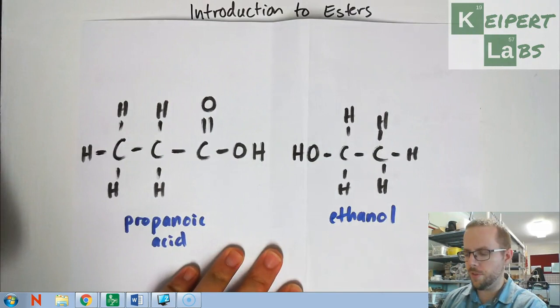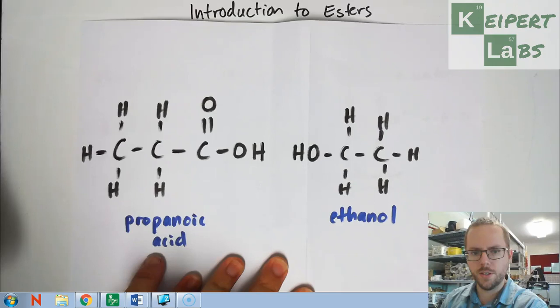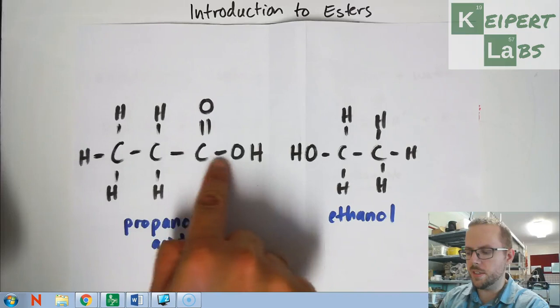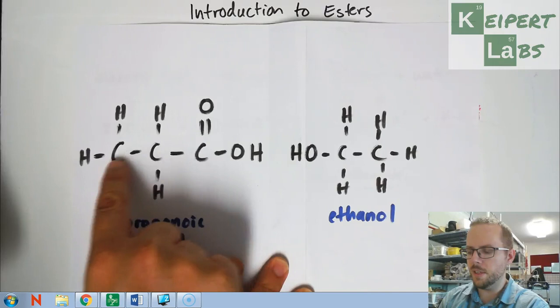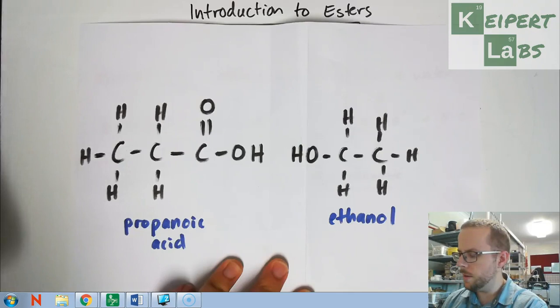So I have written out the structures of an example of an alkanoic acid and an alkanol. So I have propanoic acid over here. Remember from our previous video, we looked at this idea that we count this. So this is our alkanoic acid group, our carboxyl group, that we have three carbons, including that one, which is prop. And so it's propanoic acid. Over here, I've got two carbons. It's an alkanol. It's got the OH hydroxyl group. So it's ethanol.